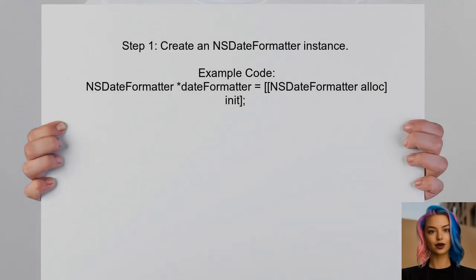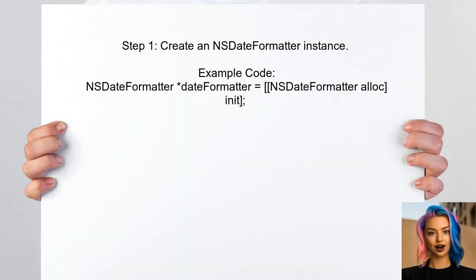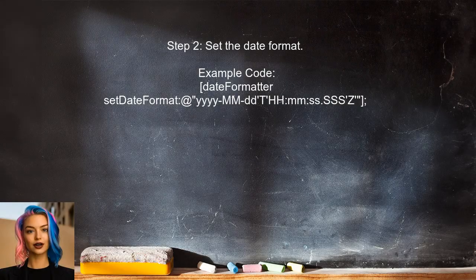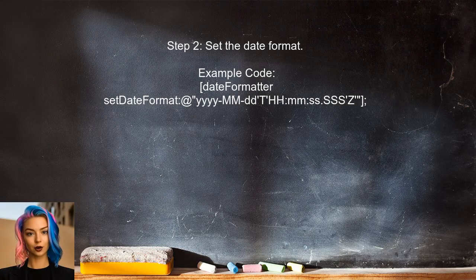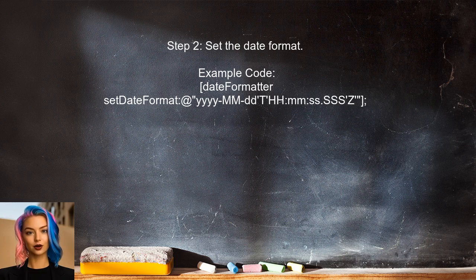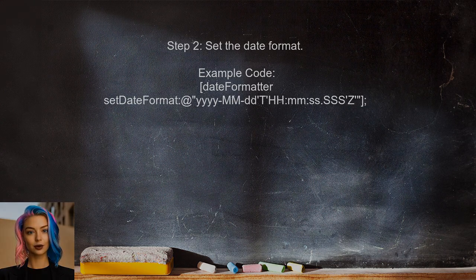To format the date string correctly, the user should start by creating an instance of NSDateFormatter. This will allow us to specify the format of the date string we are working with. Next, the user needs to set the date format for the NSDateFormatter. Since the date string contains a dot in the timezone, we will use a specific format that accommodates this.